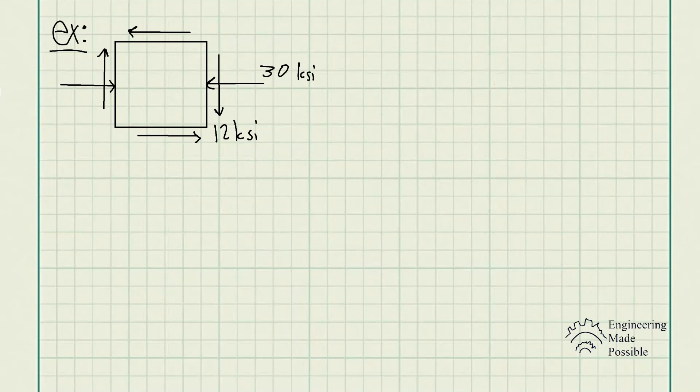In this problem statement, we have the state of stress at a point shown on the element. Determine A, the principal stress, and B, the maximum in-plane shear stress and average normal stress at the point using Mohr's circle.